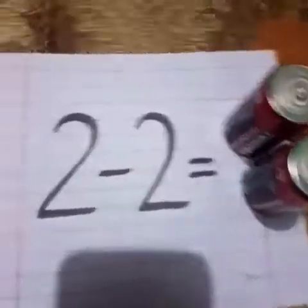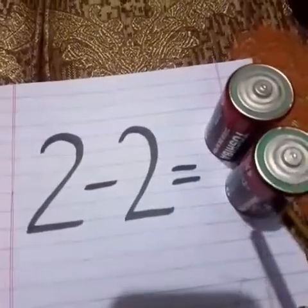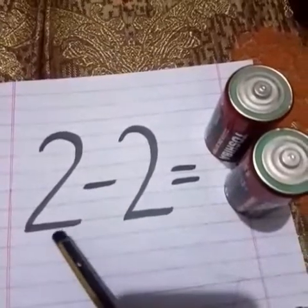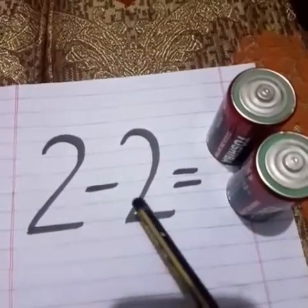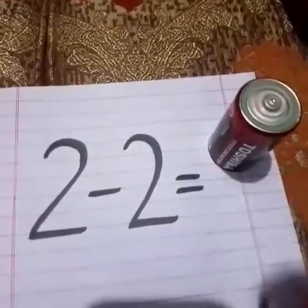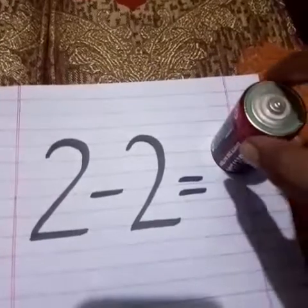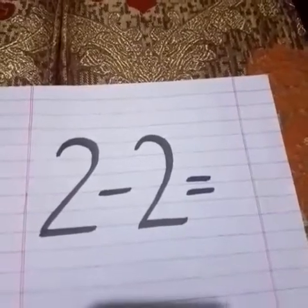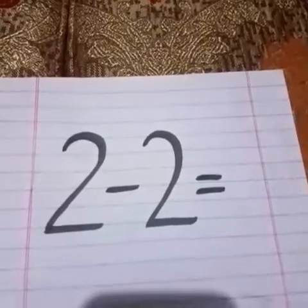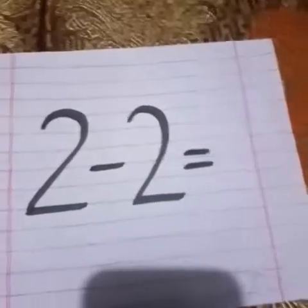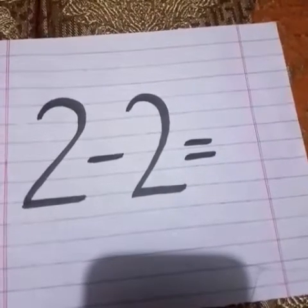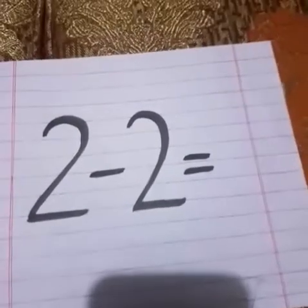How many batteries are there? 1 and 2. The third problem is 2 minus 2. So we will take these 2 batteries and give them to Aisha. Is there any battery left? No! So the answer will be 0.